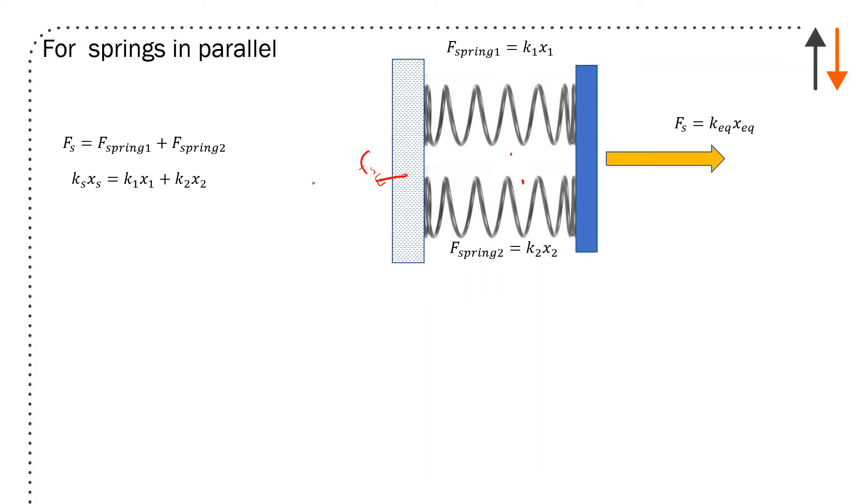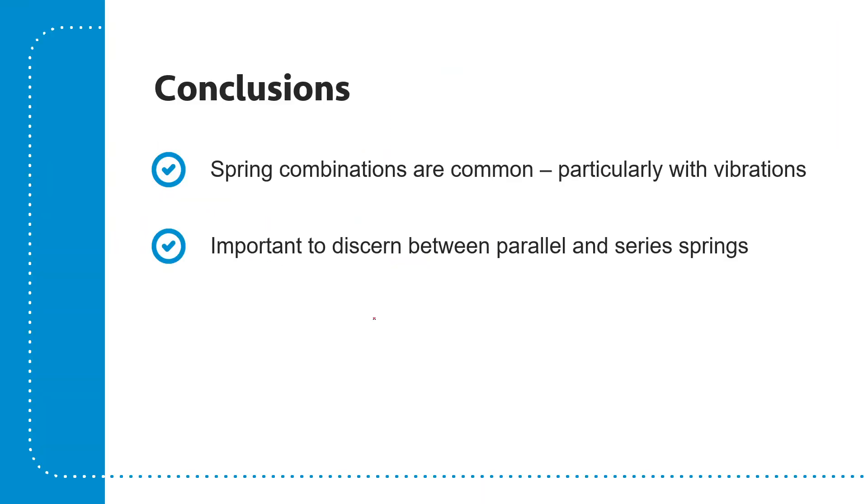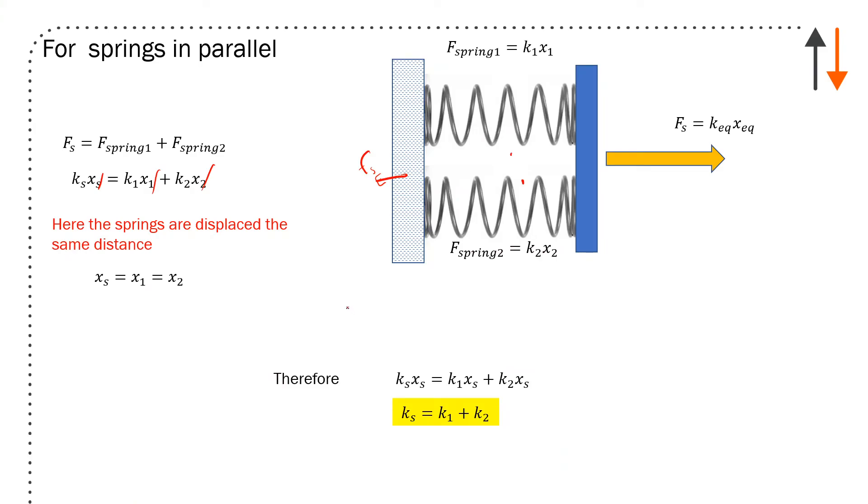If the springs are displaced by the same distance, then I know that x_s equals x_1 equals x_2. So my relationship is just going to be k_1 plus k_2 equals k_equivalent or k_s. The relationship between parallel springs is constant displacement or same displacement, and for series springs, constant force.